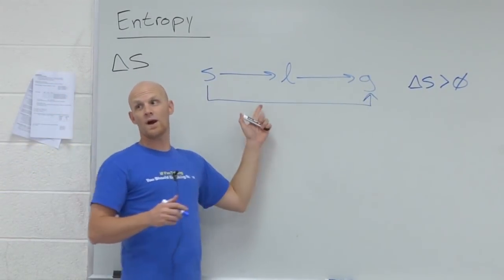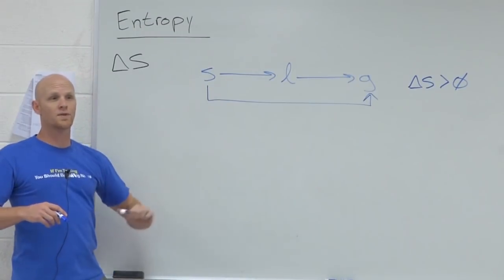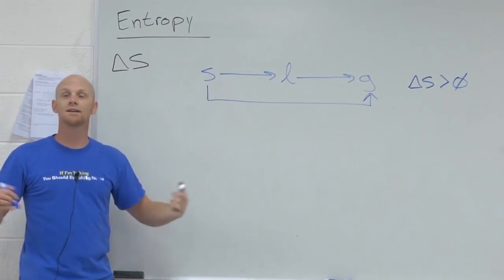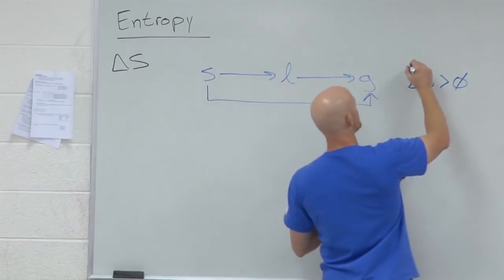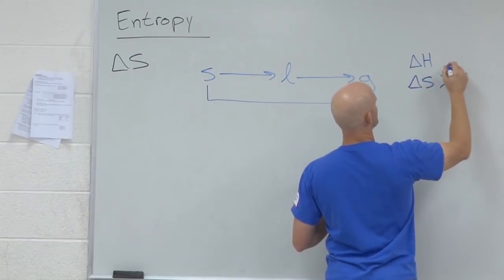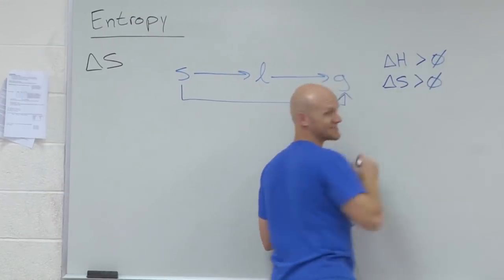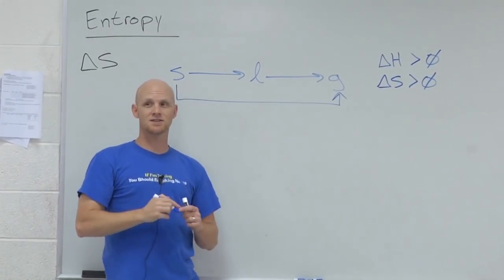They're endo. They require heat to actually happen. Notice, water doesn't boil itself. You've got to put it on the stove and give it a ton of heat to get it to boil. In this case, that would mean what about delta H? Positive. Endothermic means delta H is positive.